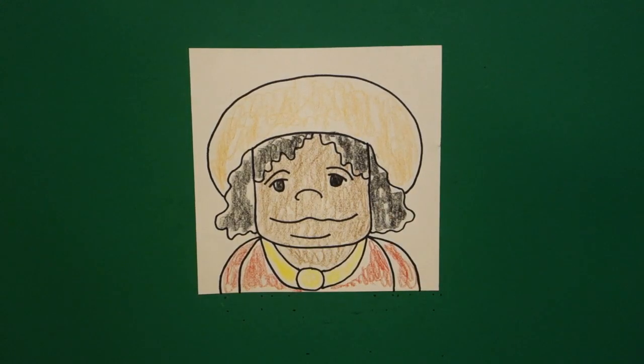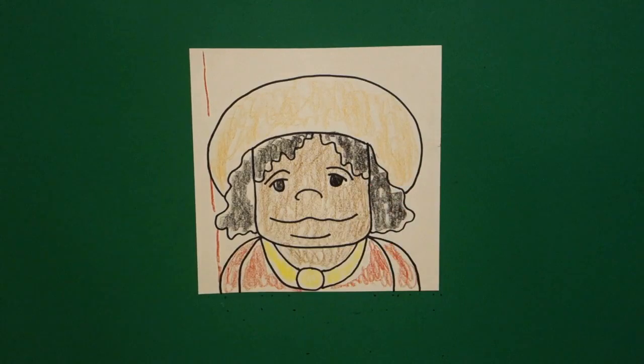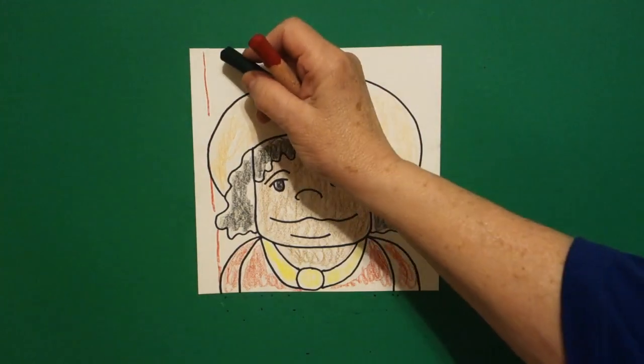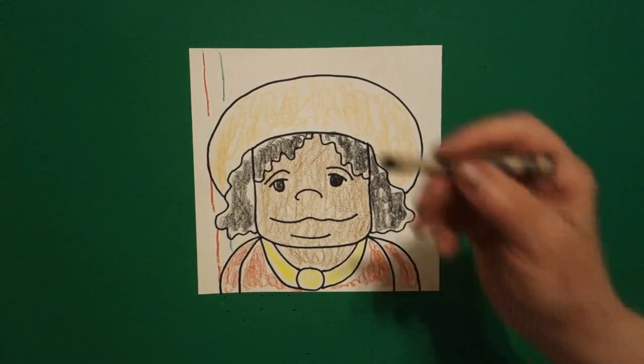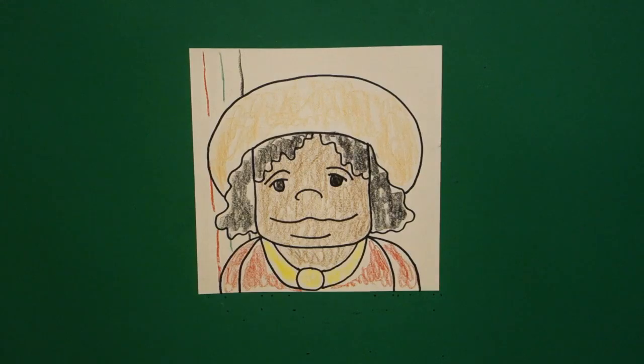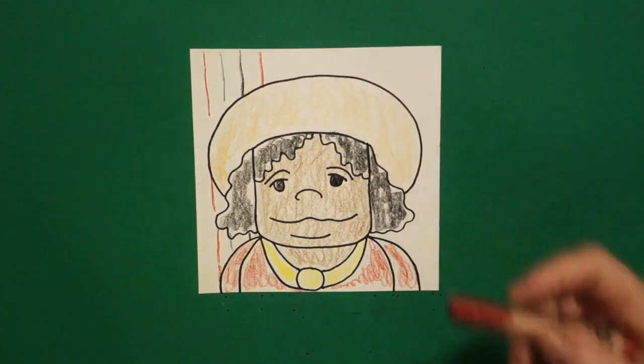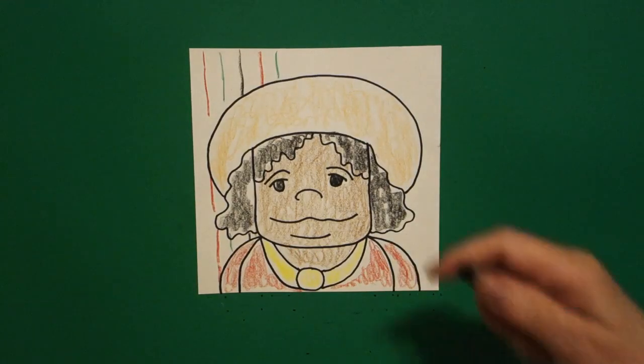Now for my background, I did a stripe of red, jump over, don't draw through your picture, green, and black. And I did that all the way across in a pattern, an A, B, C pattern. Red, green, black.